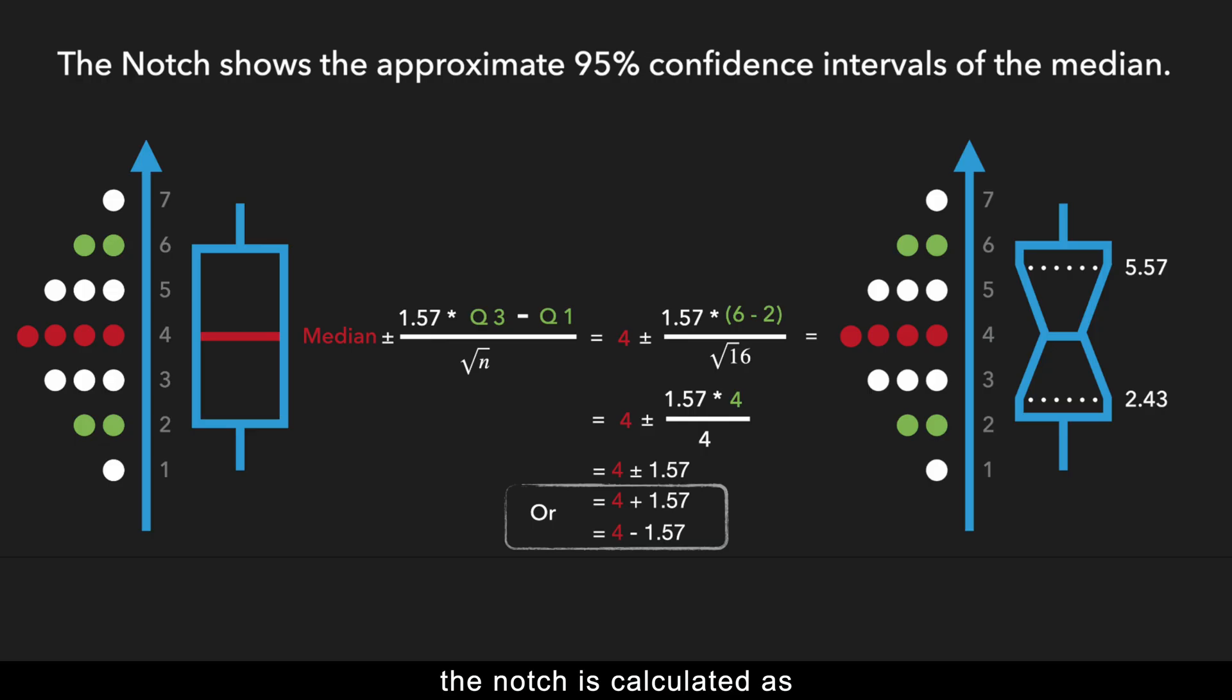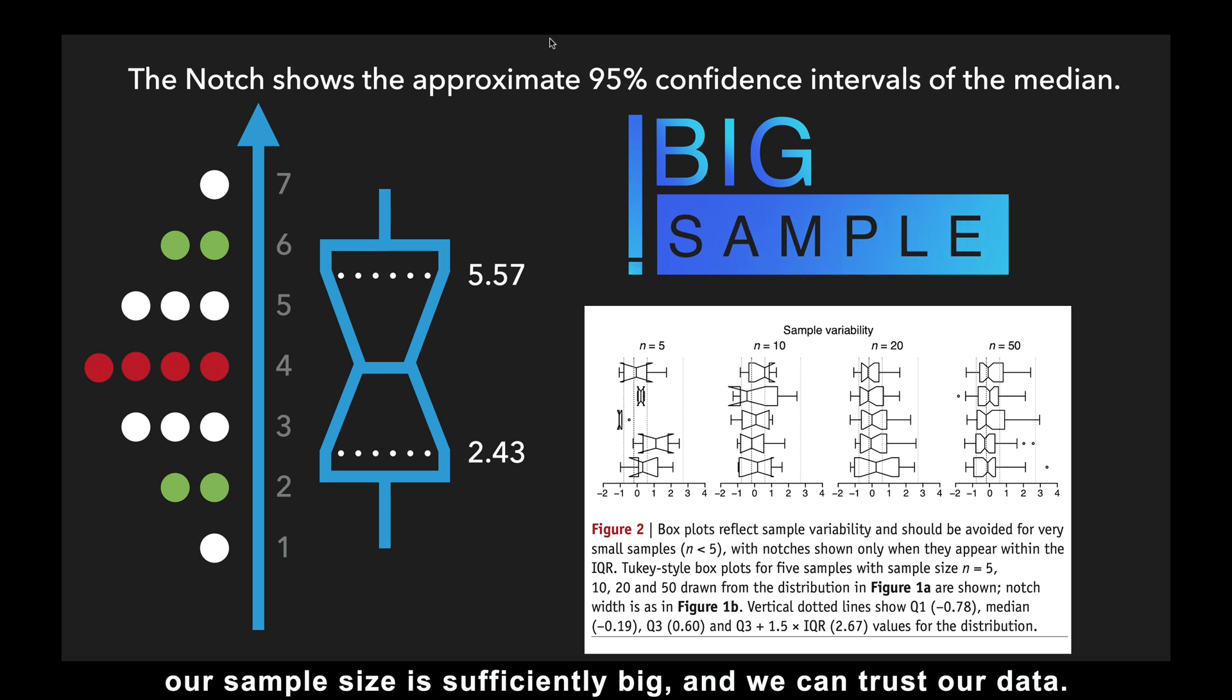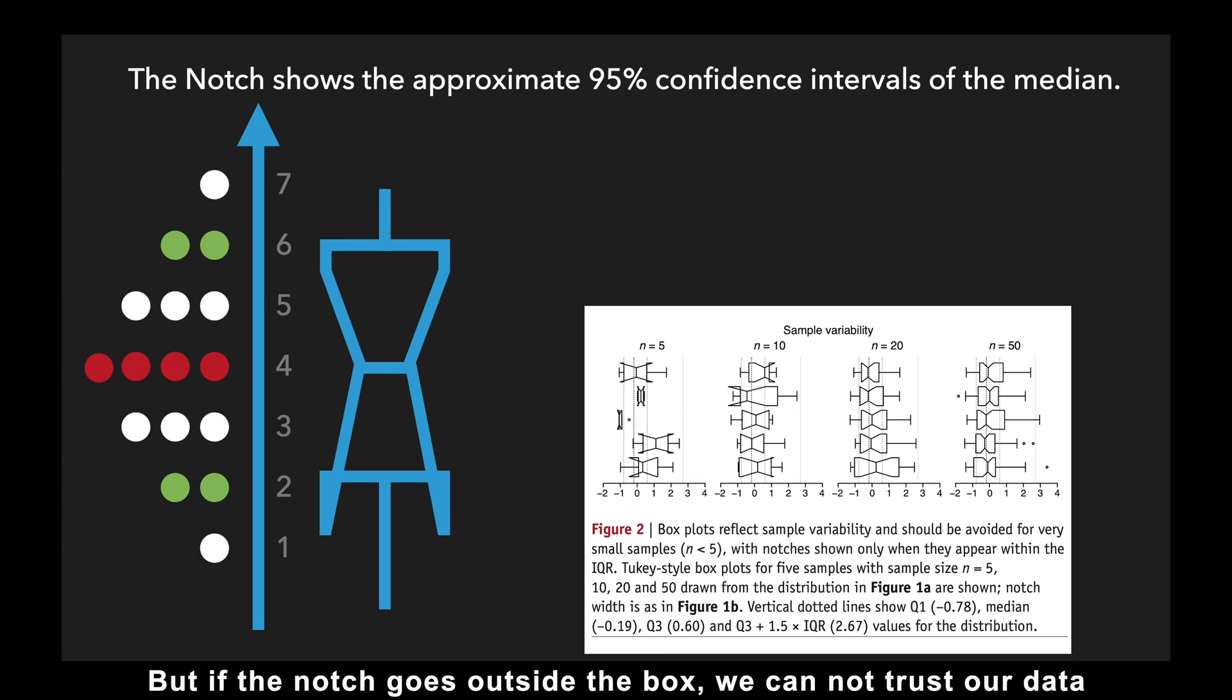The second reason the notch is important is that it gives us a hint about whether our sample size is too small or sufficiently big. Here is how we know. The notch is calculated as the median, plus or minus 1.57 times the interquartile range, divided by the square root of our sample size. So, if the notch stays inside the box, our sample size is sufficiently big, and we can trust our data. But if the notch goes outside the box, we cannot trust our data because our sample size is too small.